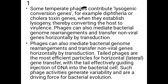Some temperate phages contribute lysogenic conversion genes — for example, the diphtheria or cholera toxin gene — when they establish lysogeny, thereby converting the host to virulence. Normally, diphtheria or cholera bacteria are harmless, but when attacked by a bacteriophage establishing a lysogenic relationship, they convert the non-virulent bacteria to virulent, because the toxin is encoded by the lysogenic phage.